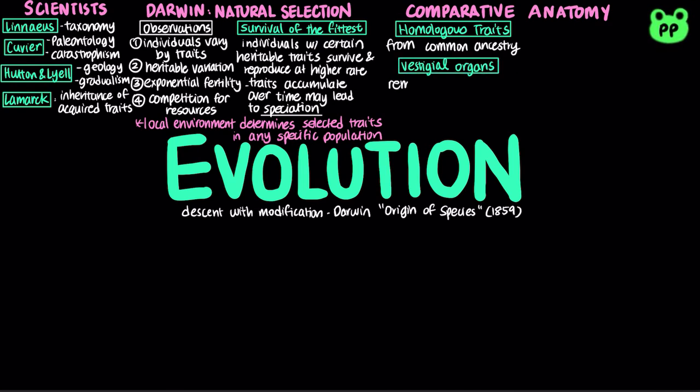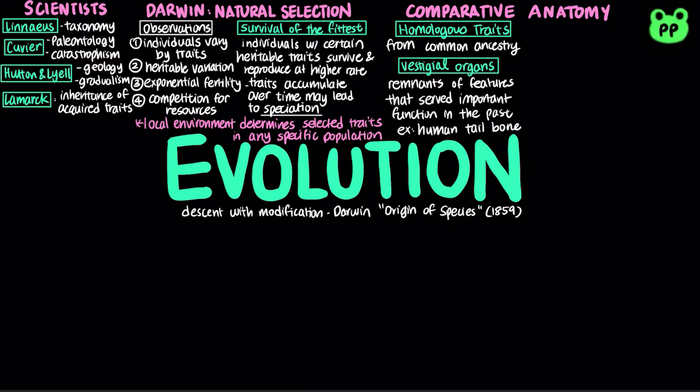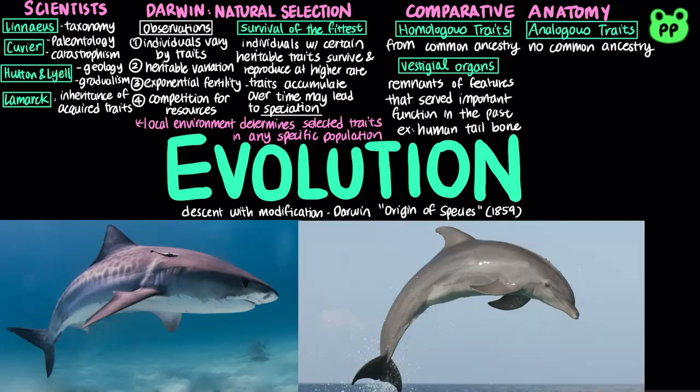Vestigial structures are remnants of features that serve important functions in the organism's ancestors, such as the human tailbone, which is evidence of our primate ancestry. Analogous traits arise when groups independently adapt to similar environments in similar ways, such as the common fusiform body shape of a shark and a dolphin, allowing them to swim efficiently.